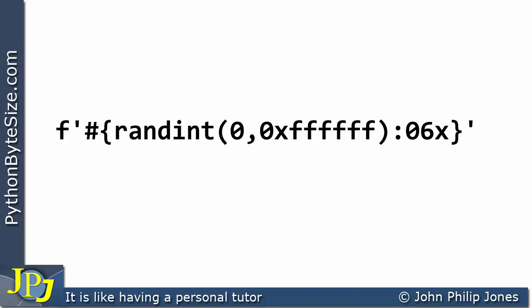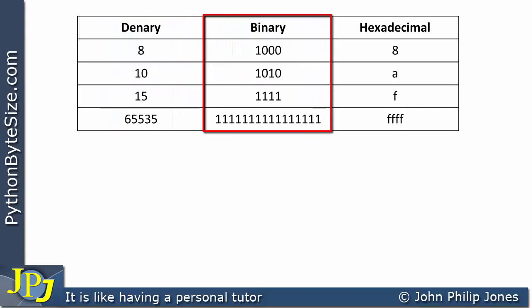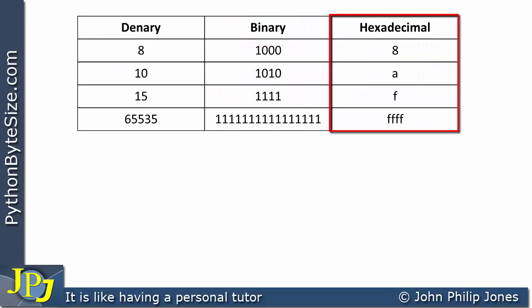We'll look at small code segments to help understand what each part means. First, let me remind you of the number systems that computer programmers use: the denary system we use in everyday life (digits 0–9), the binary system (zeros and ones), and the hexadecimal system consisting of characters 0–9 and then a, b, c, d, e, f — where a represents 10 and f represents 15.